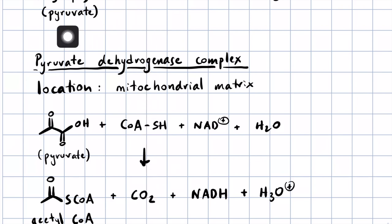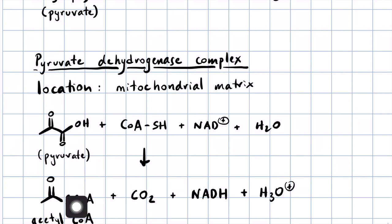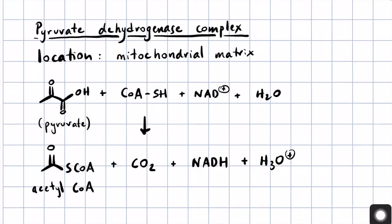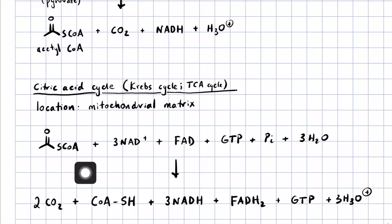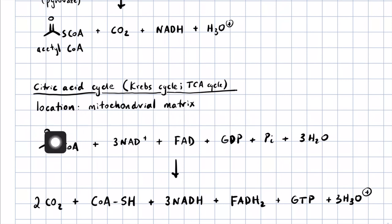From this point on, as we start with pyruvate and get acetyl-CoA, these reactions happen twice because one molecule of glucose converts to two molecules of pyruvate. Along the way we also get another NADH molecule. Then finally in the citric acid cycle we take acetyl-CoA — and I should correct that, it's GDP, guanosine diphosphate, not gross domestic product — and we'll talk about the structure of that in a little bit. We're going to convert acetyl-CoA into two molecules of CO2.